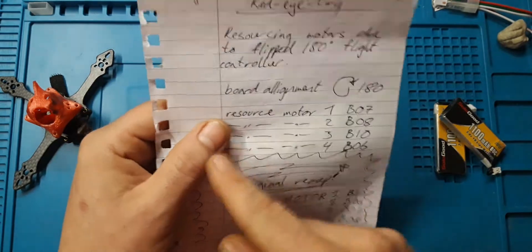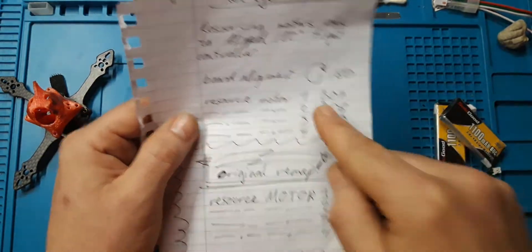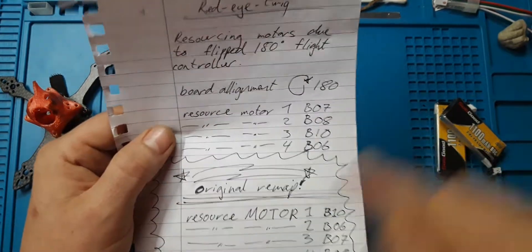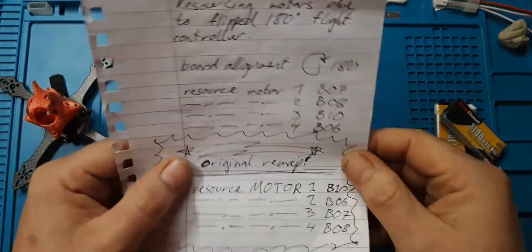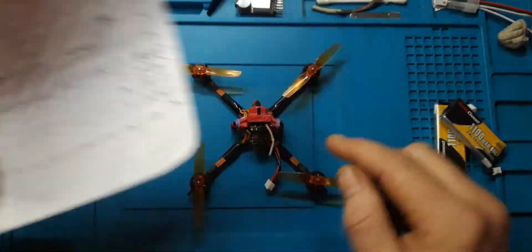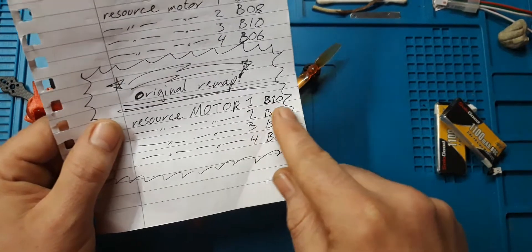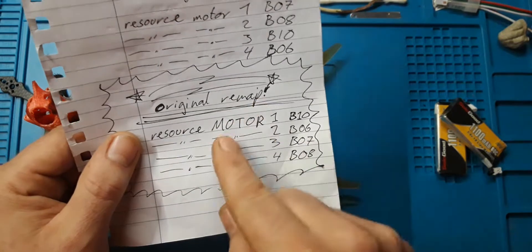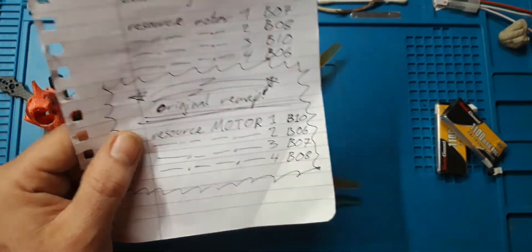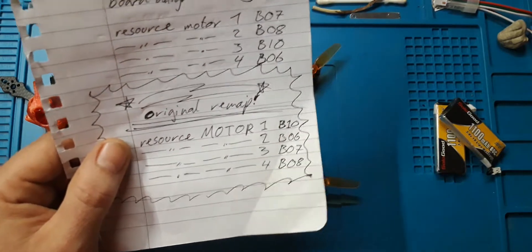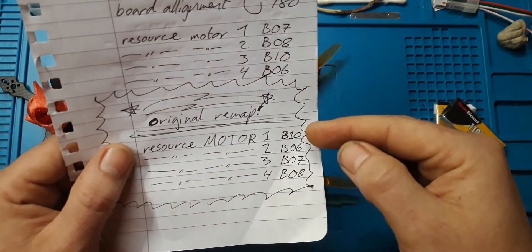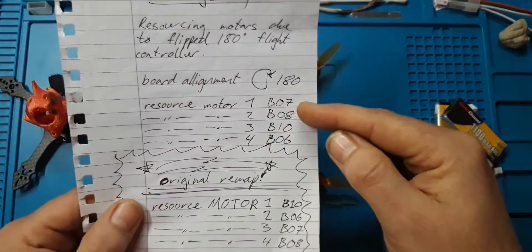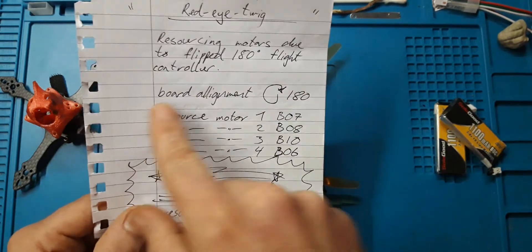Now you can do that in the CLI. All you have to do is write resource and then press enter. When you do that you'll see resource motor one and then you'll see like a number and that's an output port number. You can switch these around. Now the original remap for the Crazy B is resource motor one B10, and there's just a little space between. There's resource space motor space one space B10 and so on. That's how it came. But I had to swap motor one and three, and you can see that here.